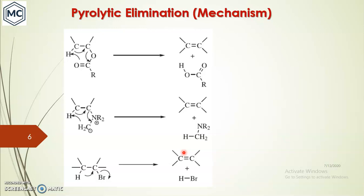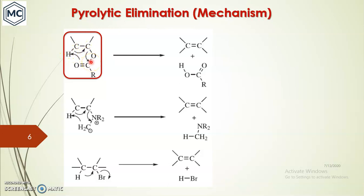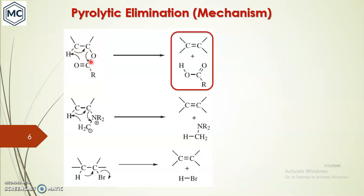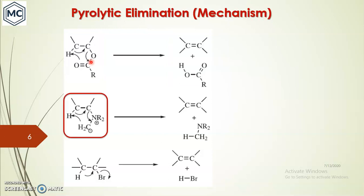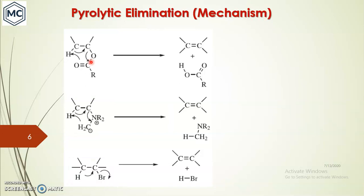These are other examples, and the mechanism of pyrolytic elimination is shown with three examples. In the first case, the ester undergoes elimination to give an alkene via a concerted mechanism — this hydrogen is grabbed and eliminated in a concerted reaction. The second compound also undergoes a concerted mechanism to give an alkene. The third compound is an alkyl halide undergoing a similar reaction. The basic difference among these three compounds is that the first involves a six-membered ring transition state, the second a five-membered ring, and the third a four-membered ring.